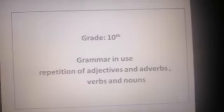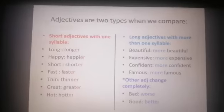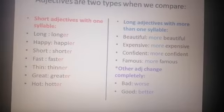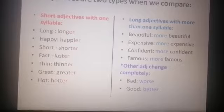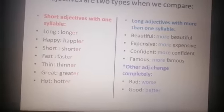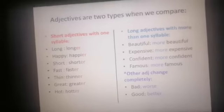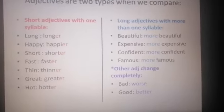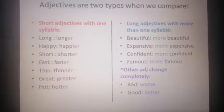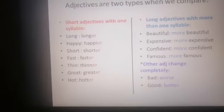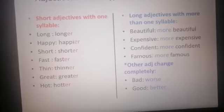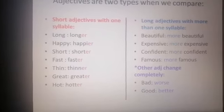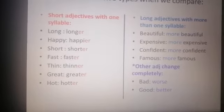Before we start, you should remember that there are two types of adjectives: long adjectives and short adjectives. For short adjectives, it's enough to add -er to make a comparison — long becomes longer, happy becomes happier, short becomes shorter. But for long adjectives, you can't add -er. Instead you say 'more beautiful,' 'more expensive.' There are also irregular forms that change completely — bad becomes worse, good becomes better.